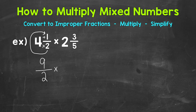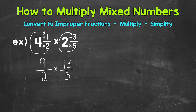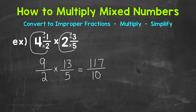Let's bring our multiplication sign down and convert the other mixed number. Multiply then add: 5 times 2 is 10, plus 3 gives us 13 — that's our numerator — and we keep the denominator of 5. Once we have our mixed numbers converted to improper fractions, we can multiply straight across: numerator times numerator and denominator times denominator. 9 times 13 gives us 117, and 2 times 5 gives us 10. So that's our answer as an improper fraction: 117 tenths.